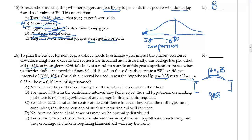Could this interval be used to test the hypothesis p = 0.35 versus p ≠ 0.35 at the alpha = 0.10 level of significance? And the answer is yes. Because remember I told you 90% is associated with an alpha of 0.10, so that condition is met.